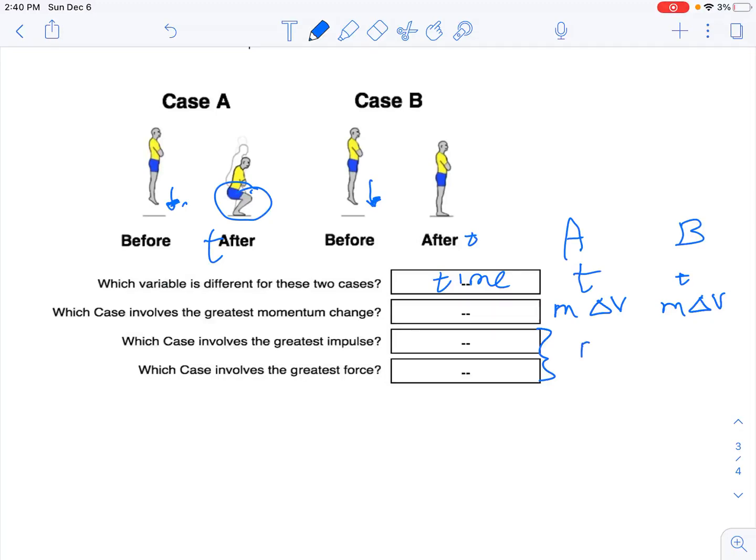But when it comes to case A, you're slowing yourself down with a longer impact time so you can supply less force to do that. So it's easier on your body, on your knees. Whereas if you just land with a locked knee, it's a lot of force over a smaller period of time.